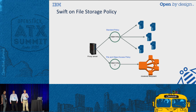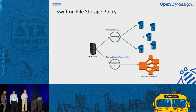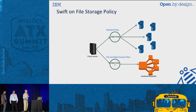Storage policies allow you to specify for a set of containers what kind of storage layout and replication level is required. In this example, the top storage policy is the traditional Swift storage policy with its own ring, dictating how objects are laid out on systems with traditional servers and locally attached disk. The second storage policy at the bottom is a clustered or shared file system, and in this case the ring describes how object data is laid out within that clustered file system.